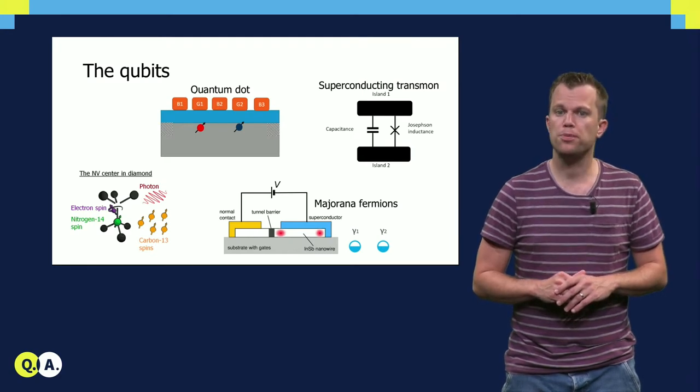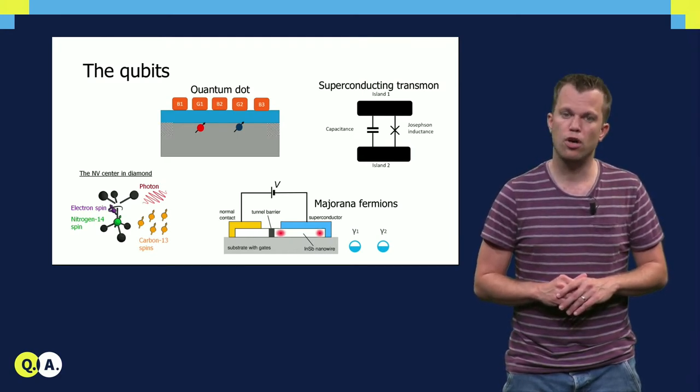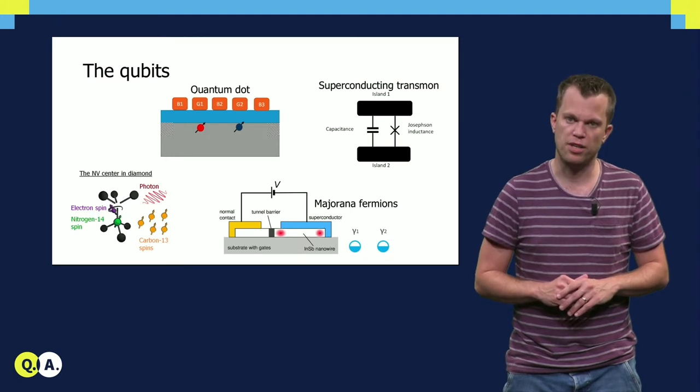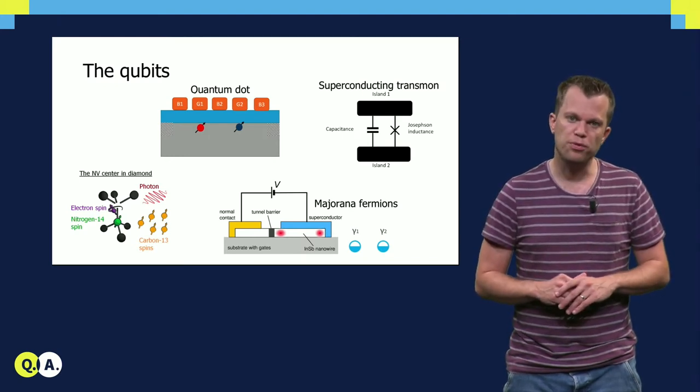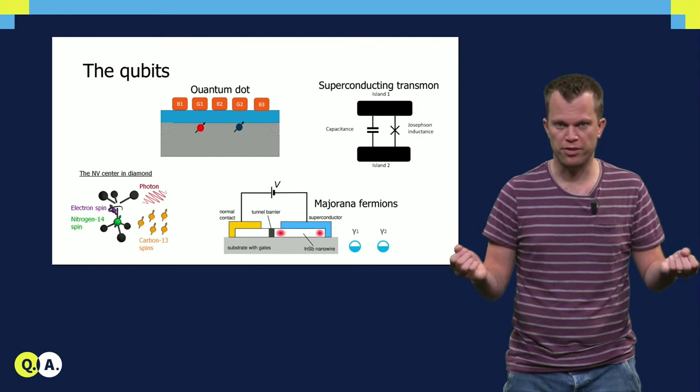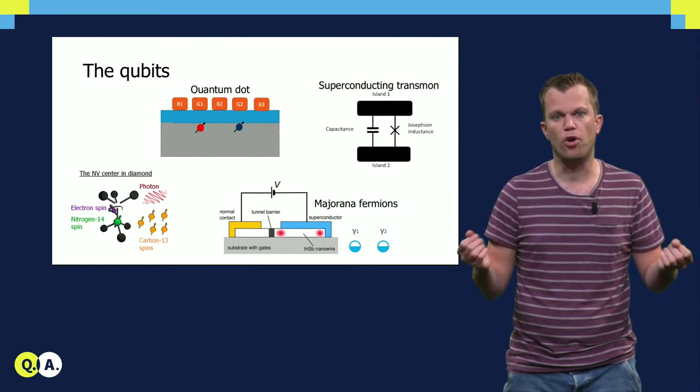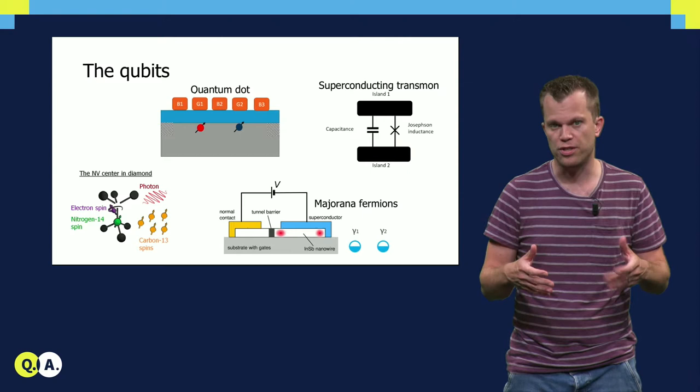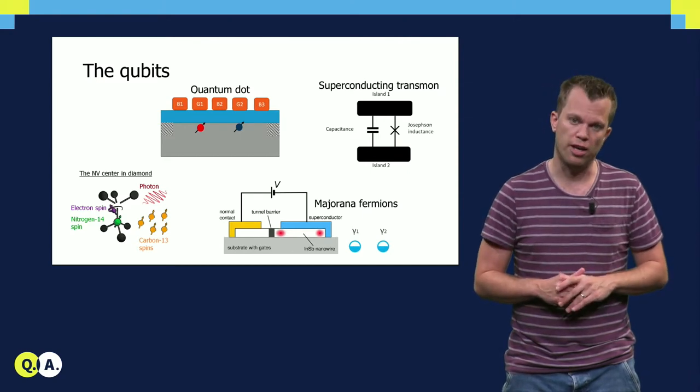These qubits could become exponentially less sensitive to local noise with increasing system size. That is, by increasing the separation between Majorana-Fermions, the qubits become more and more protected against local noise, and can thus hold their coherence for a longer time.